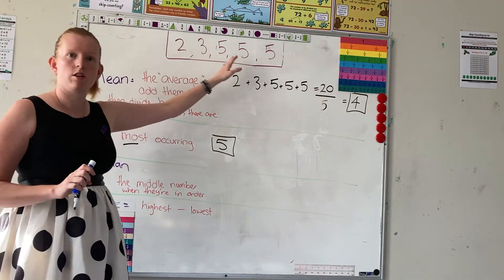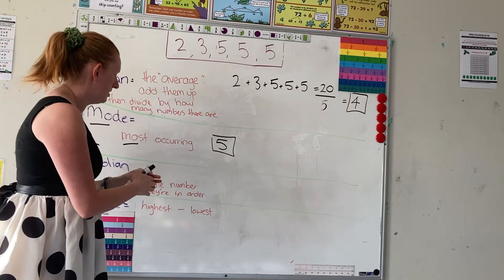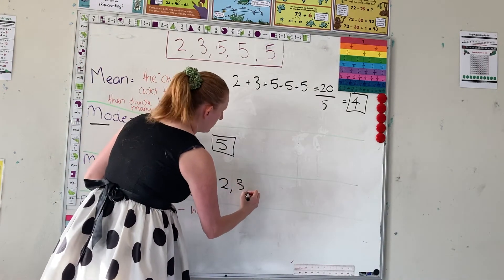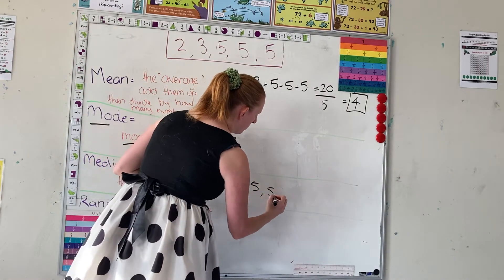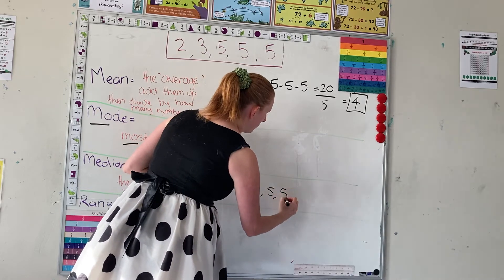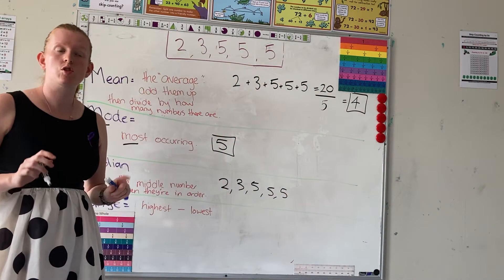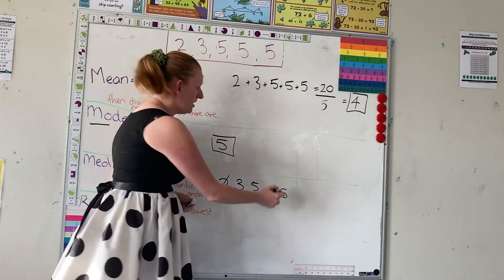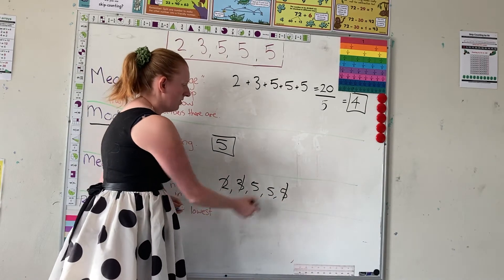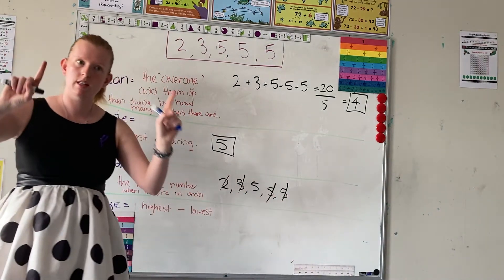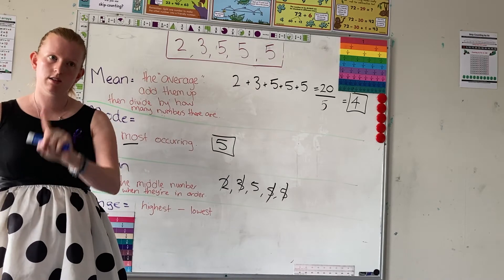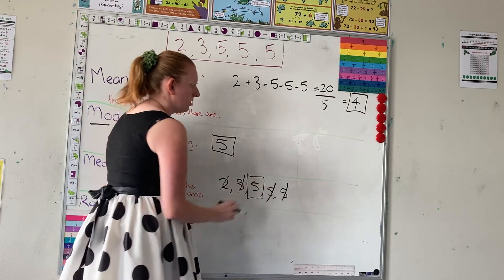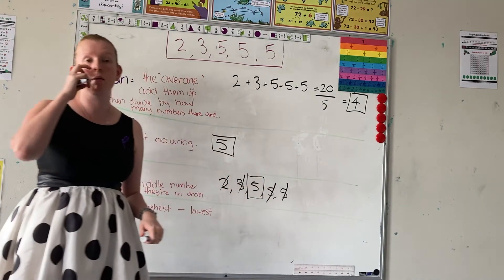First you need to make sure the numbers are in order, which they already are. So I'm just going to write that here too: two, three, five, five, five. Then what you do is you just cross one number off at the start and then one at the end, equally, until you get down to just one number left. So this here is our median number.